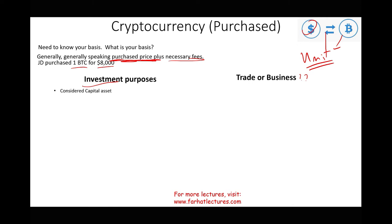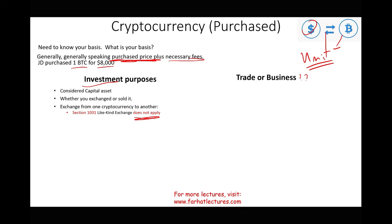Most people buy cryptocurrency for investment purposes — it's considered a capital asset. When you sell it, you have a capital gain or capital loss. Section 1031 like-kind exchange does not apply to cryptocurrency. If you exchange from one cryptocurrency to another, it's as if you sold it and bought the other — a taxable transaction. Short-term and long-term capital gain rules apply based on whether you held it less than or more than a year.